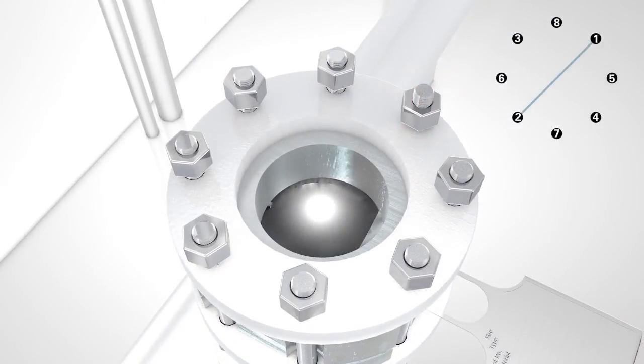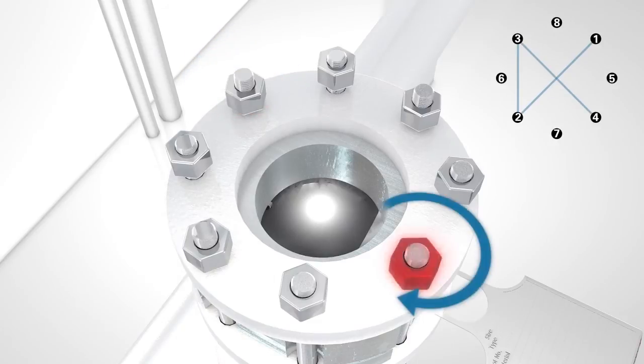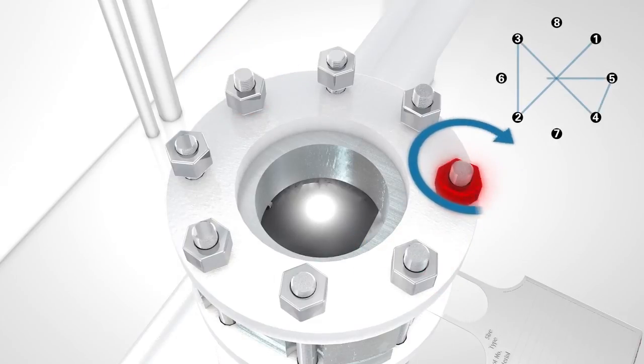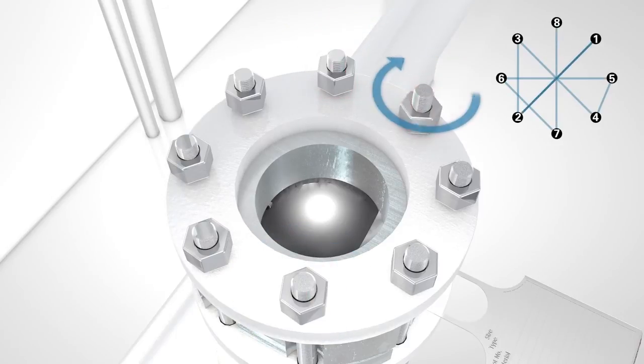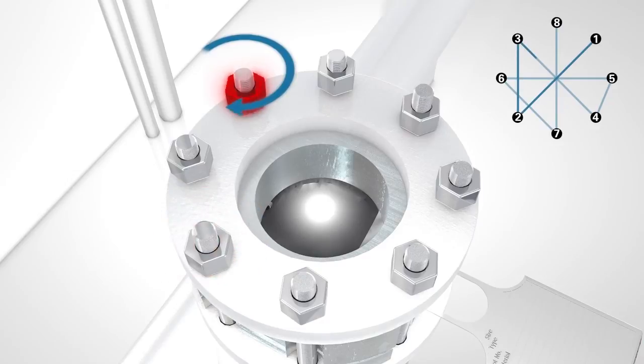Using a criss-cross pattern, apply torque in 25% increments. For example, if the required torque is 100 ft-lbs, torque would be applied in 25 ft-lbs increments using the criss-cross pattern.